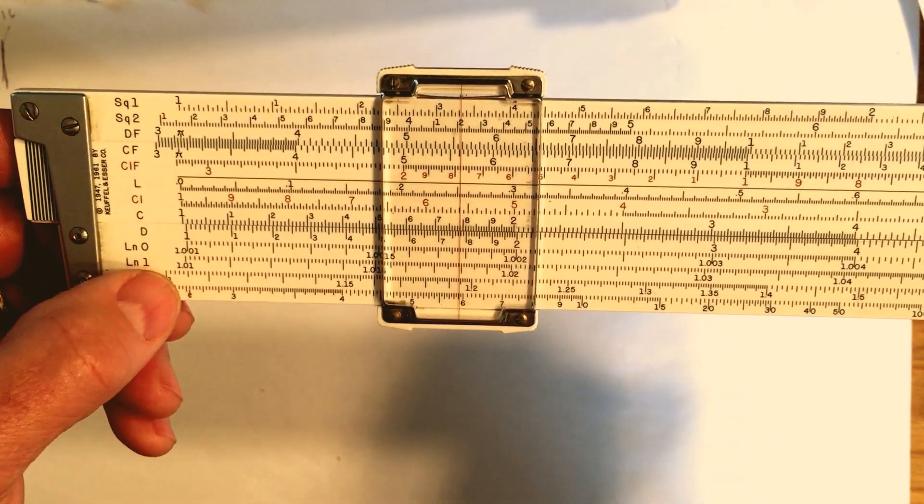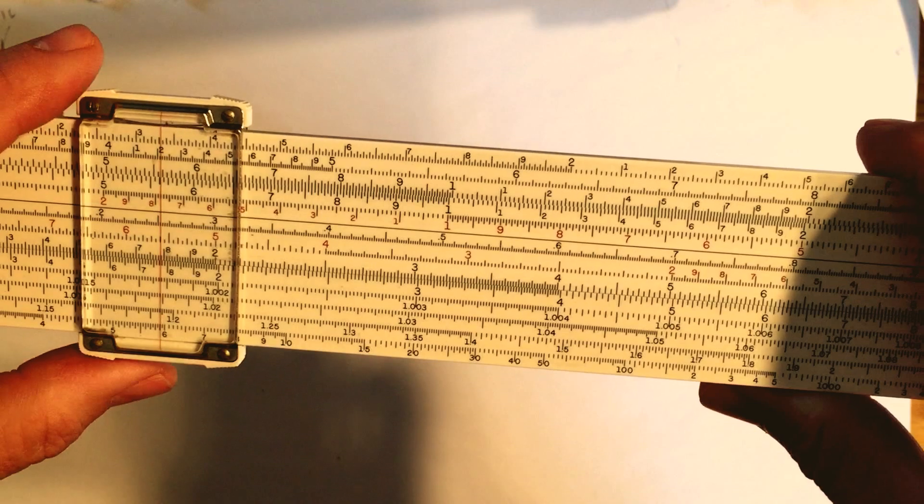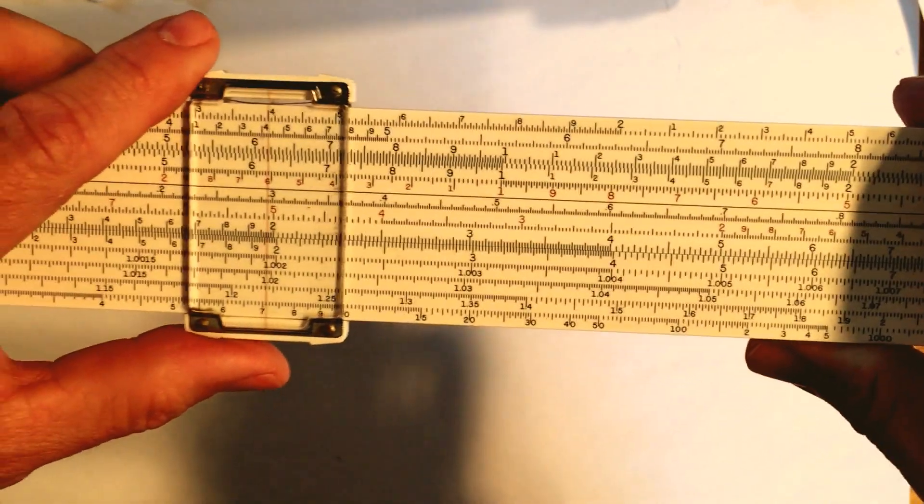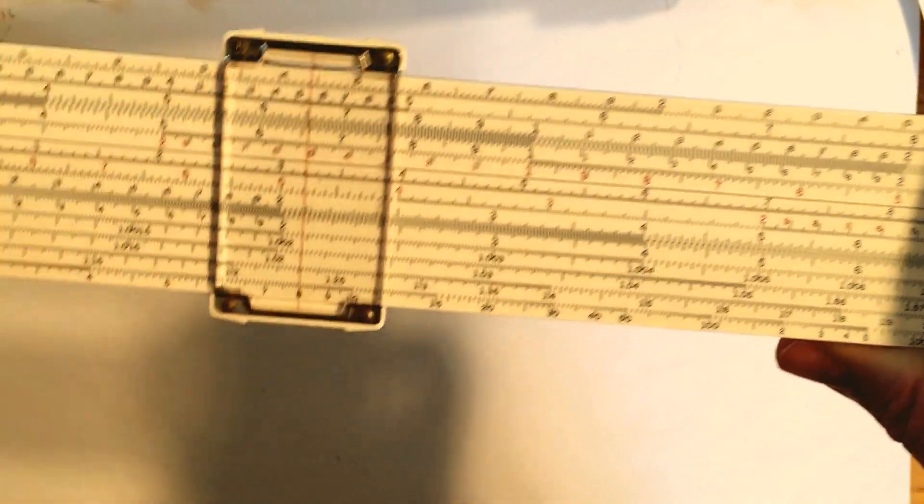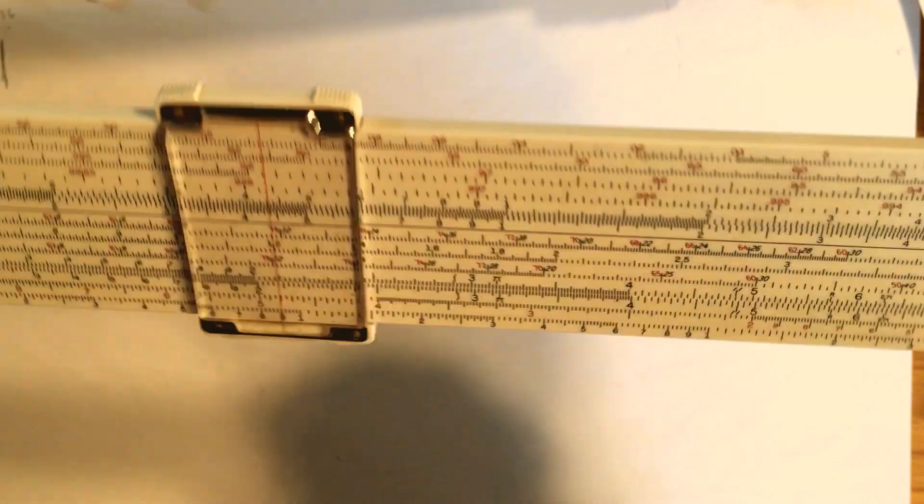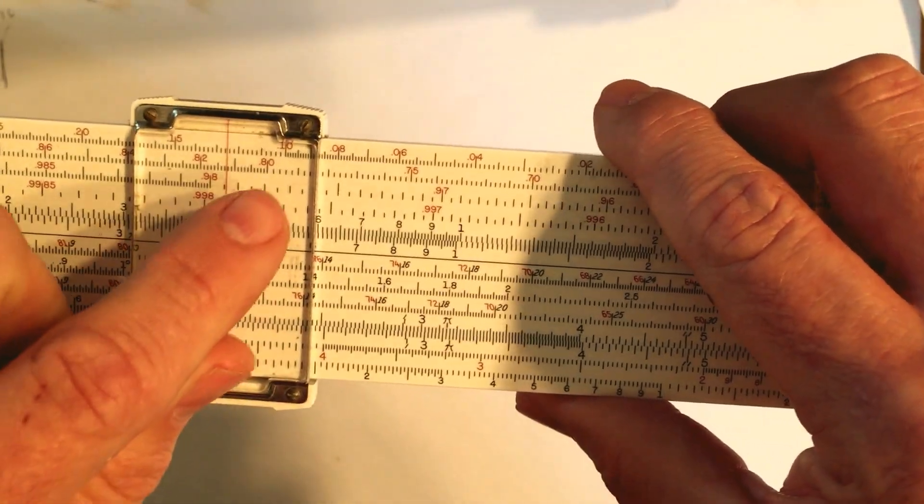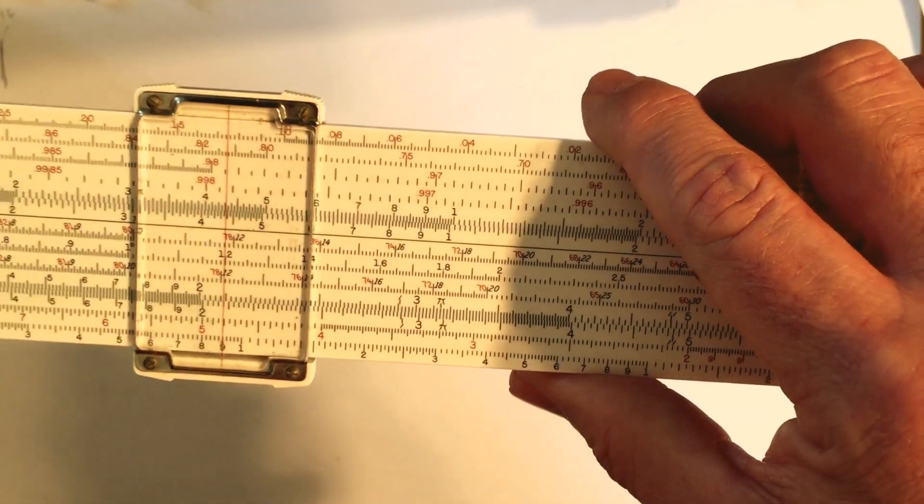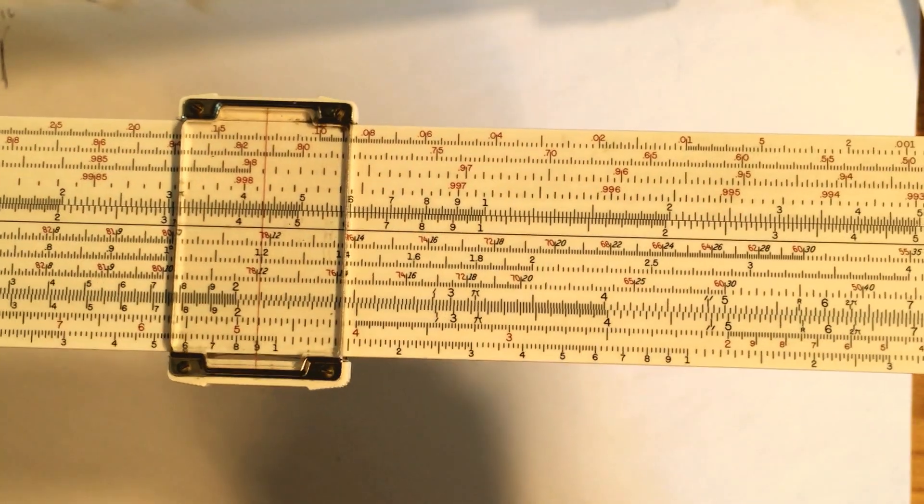Of course you can use these log scales to find exponents and different types of roots, but take for example if I want to figure out something like, I always have trouble figuring out fractional values, the decimal values of fractions. So I can position it at eight, which is one-eighth, then if I want to know one-eighth, simply flip it over, read the minus three, and I get 0.125, which is right, and you get pretty good accuracy doing this. So it's a very good way to find reciprocals.